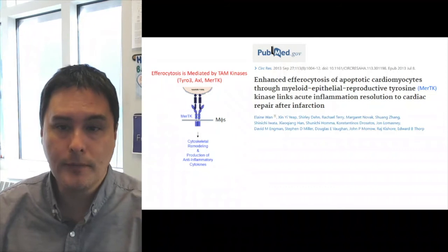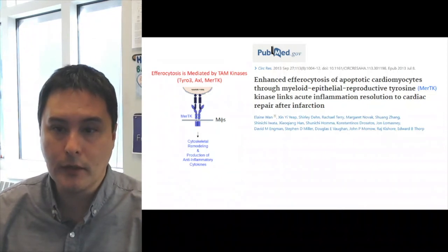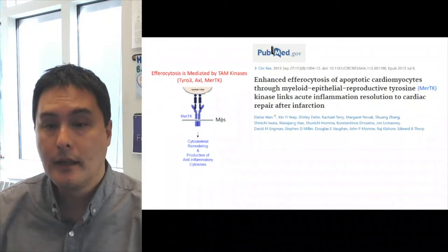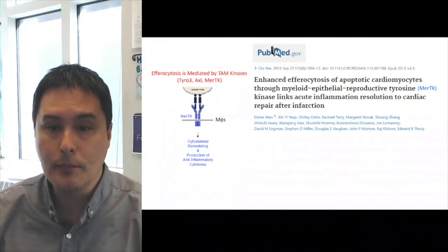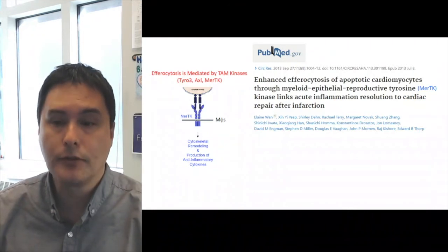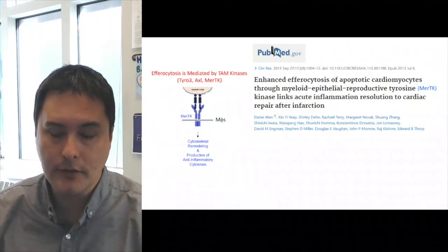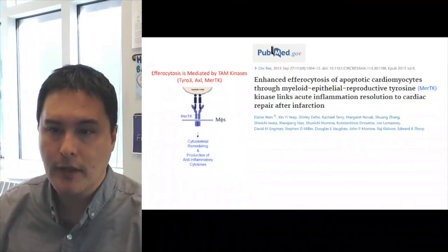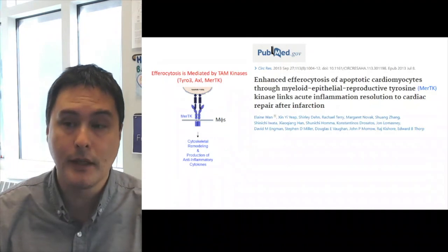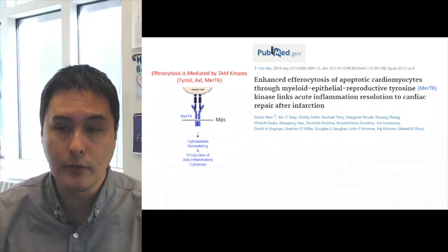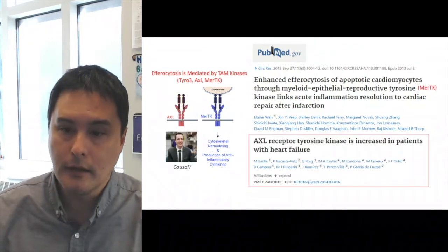Efferocytosis is mediated by a number of receptors including the TAM kinases known as TYRO-3, AXL, and MERTK. In the case of MERTK, MERTK recognizes apoptotic cell phosphatidylserine and triggers through its tyrosine kinase domain cytoskeletal remodeling and the production of anti-inflammatory cytokines. We had previously published that enhanced efferocytosis of apoptotic cardiomyocytes through MERTK links acute inflammation resolution to cardiac repair after MI.